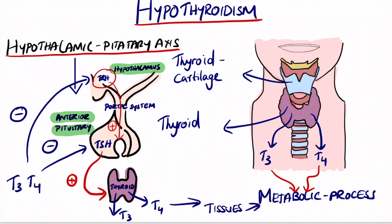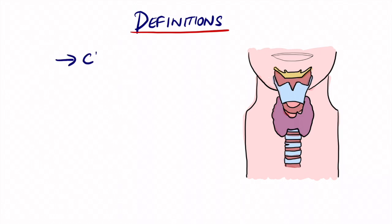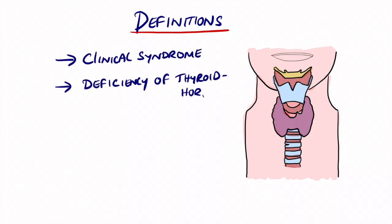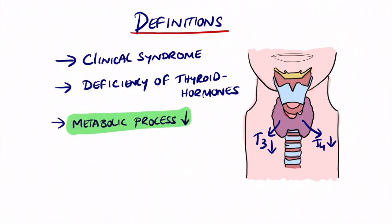Now let's think about what hypothyroidism means. Hypothyroidism is defined as a clinical syndrome or deficiency in thyroid hormone. This leads to a decreased metabolic process — a decrease in T3 and T4 leading to decreased metabolic activity in the body.